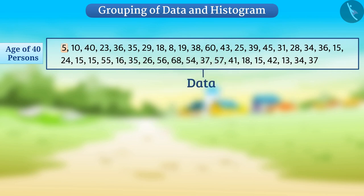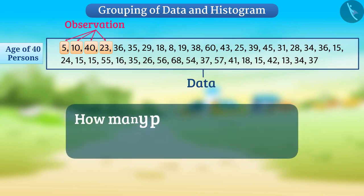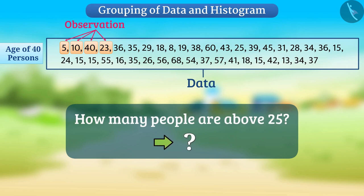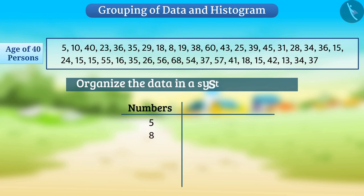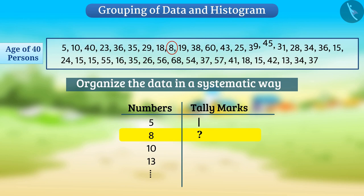Here, each number is an observation. Information from these figures such as how many people are above 25 is not easy to find. Therefore, we organize the data in a systematic way such as by making tables using tally marks. But it will not be easy to do this here because the number of observations are very large. And if we show each observation in the table, then the table will be very long.